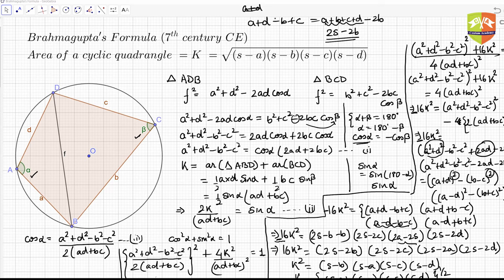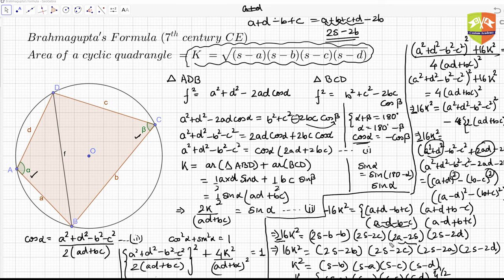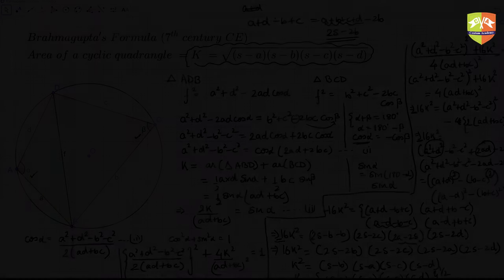This is Brahmagupta's formula: K = [(s−a)(s−b)(s−c)(s−d)]^(1/2). Whenever a cyclic quadrilateral is given, you now know how to find its area. This completes the proof.